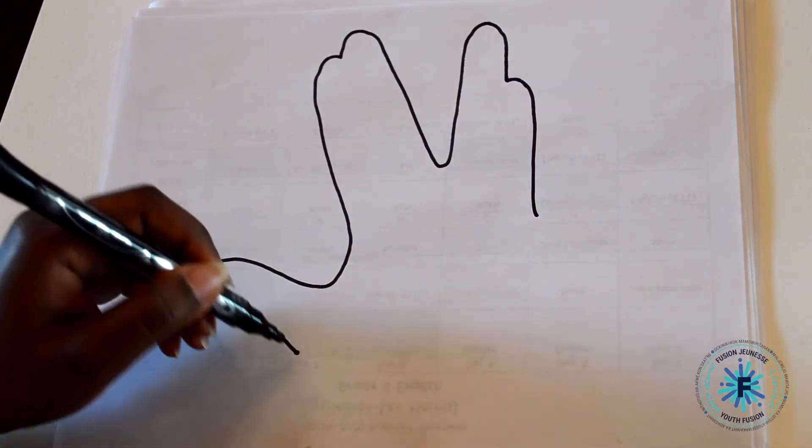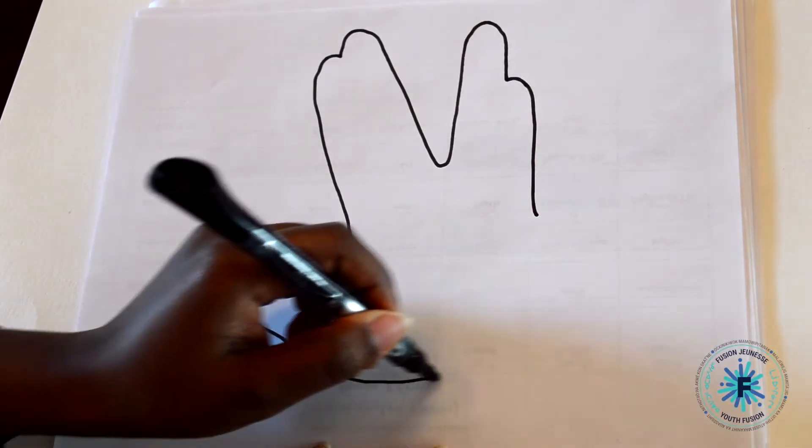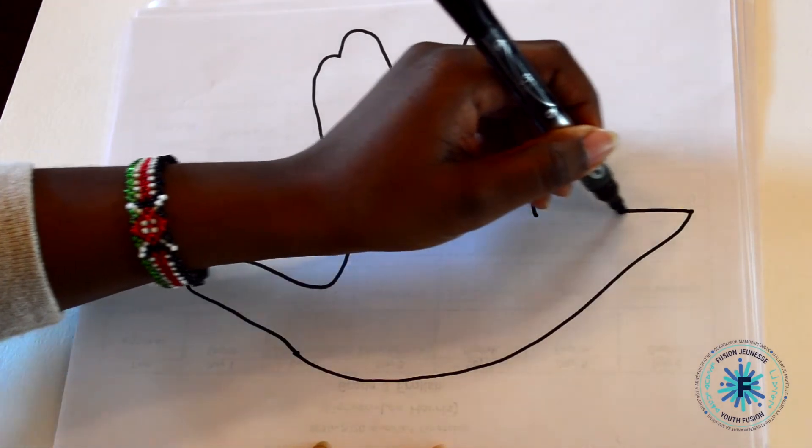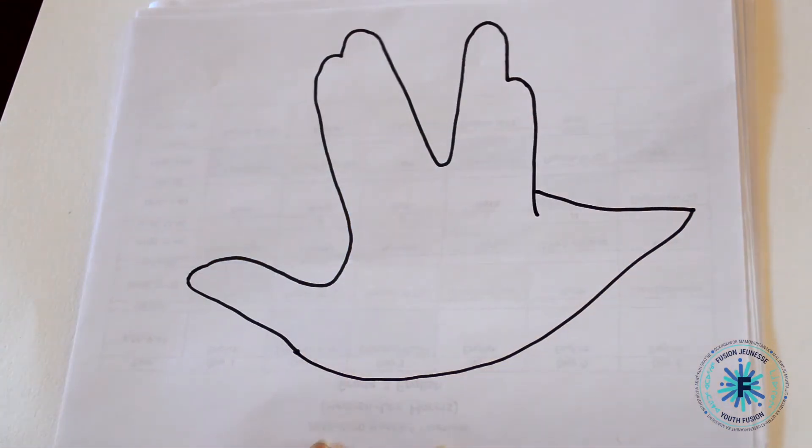Lift your hand off the paper and continue the line towards the pinky and past the starting point to draw the tail.